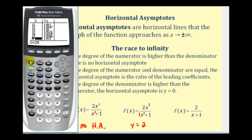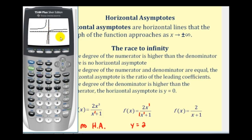Looking at the graph, as we move to the right — as x approaches positive infinity — the y value is approaching positive two. And if we approach negative infinity, we can see it's also approaching positive two.